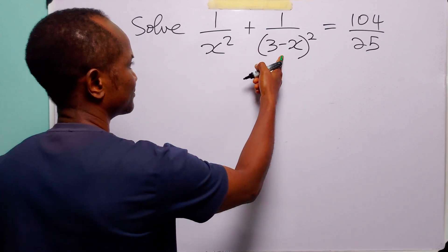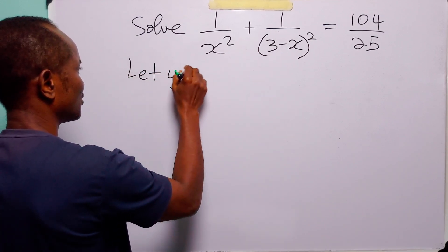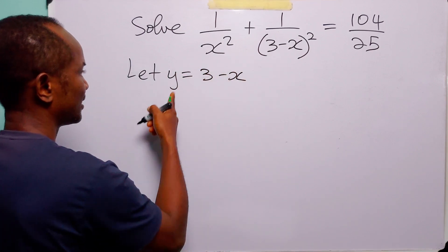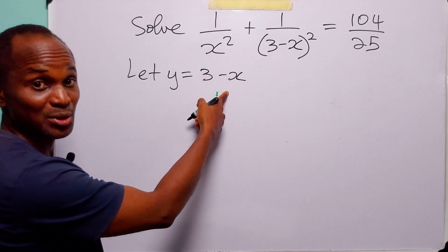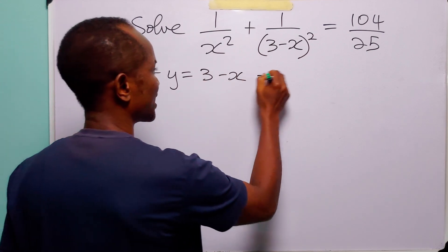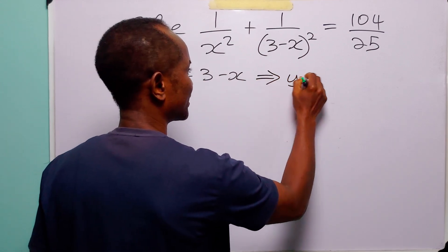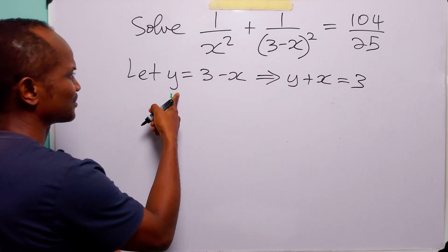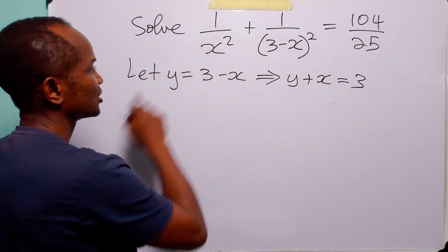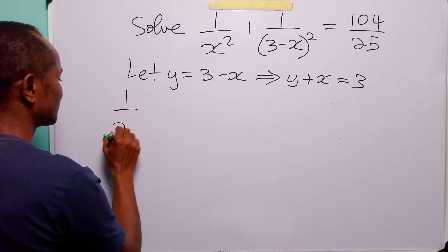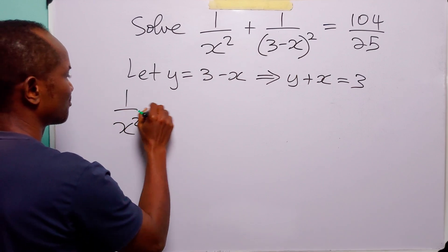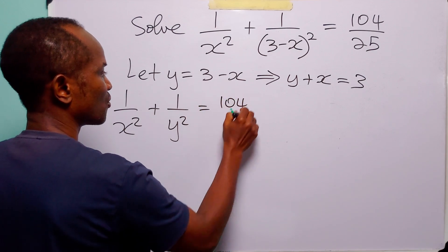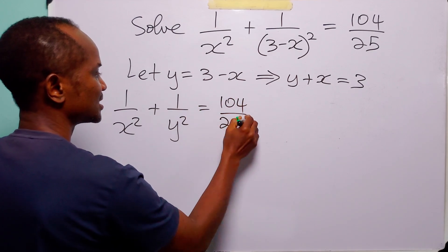Now let y be equal to 3 minus x. When we add x to both sides of this equation, we have that y plus x is equal to 3. Now with this substitution, the original equation becomes 1 over x squared plus 1 over y squared is equal to 104 over 25.